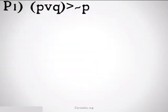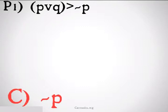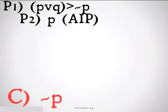Let's take a look. Our first problem: P or Q implies not P, and we want to conclude not P. As with all indirect proof problems, what you're going to want to do is assume the opposite of the conclusion. The opposite of not P is just going to be P, assumed indirect proof.